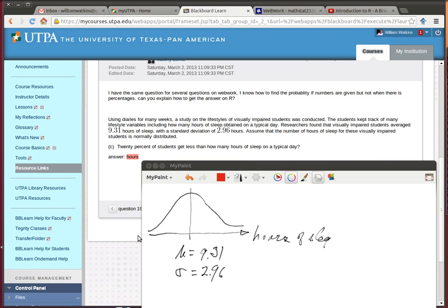50% of the students get less than that number of hours of sleep because it's normally distributed and the mean is 9.31. And so half of the population is below there.